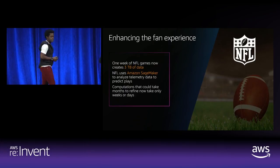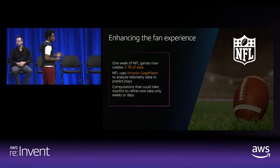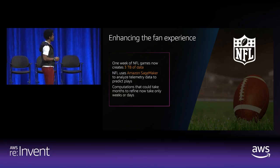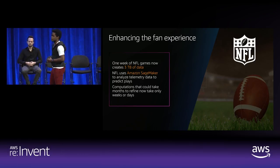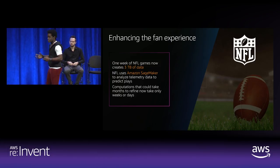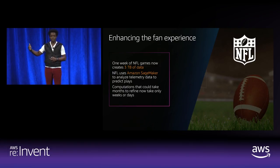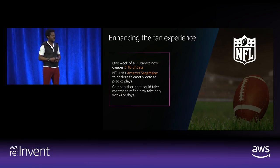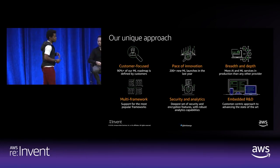In sports analytics, the NFL is ingesting terabytes of data into the cloud and leveraging Amazon SageMaker to transform the experience for their customers when it comes to the game. We're seeing similar dynamics with Formula One, essentially ingesting terabytes of data from the cars during the race, then using machine learning on SageMaker to transform the visual experience for race viewers.